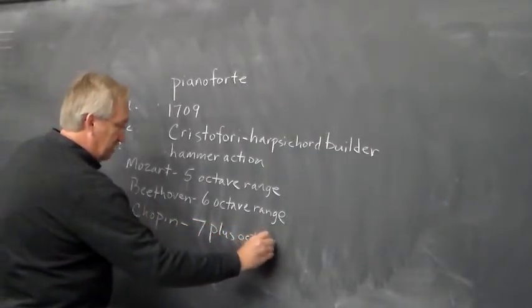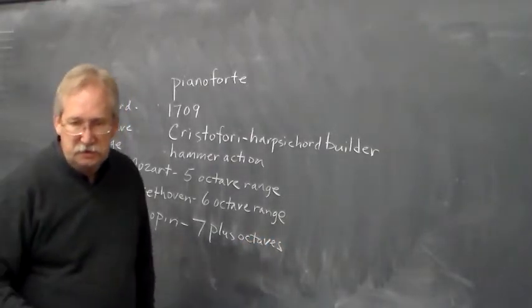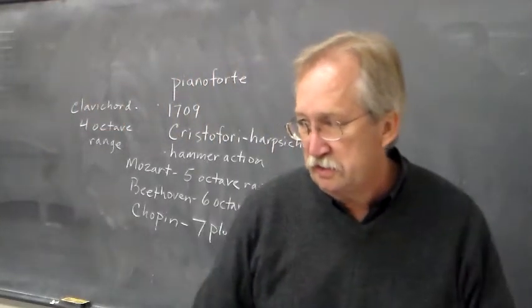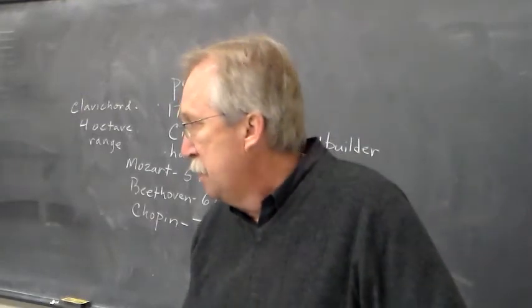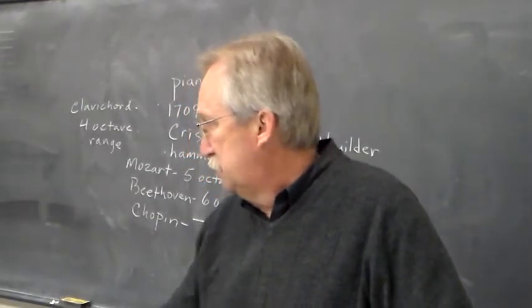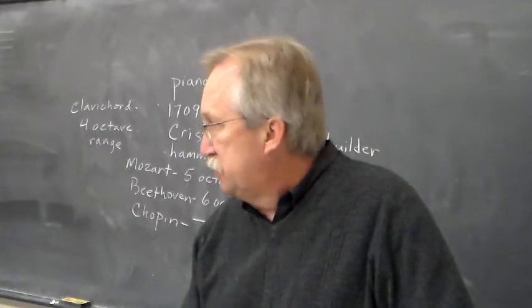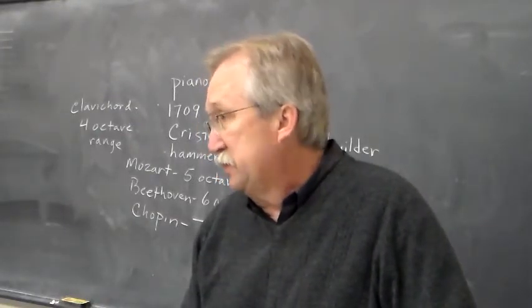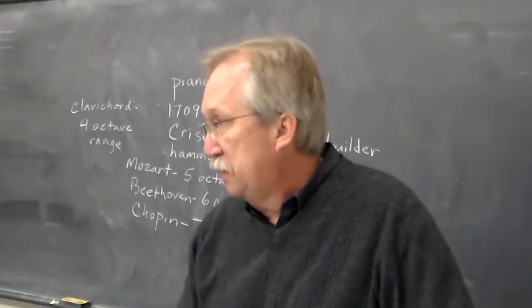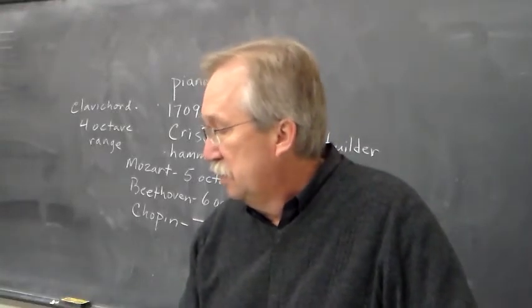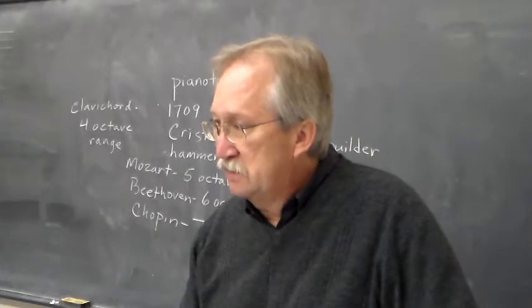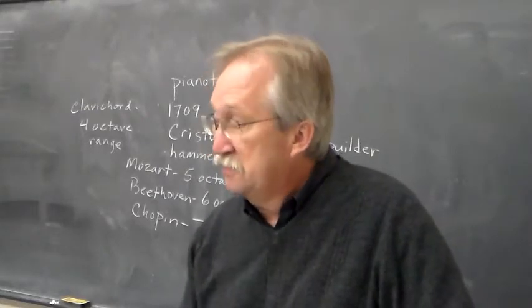And so the full range of the instrument then emerged in the Romantic era, and now we're used to the basic standard 88 keys, which there are even some instruments that extend the bass. Bösendorfer piano, that's made in Vienna, has an extended bass, up to seven extra notes in the bass.